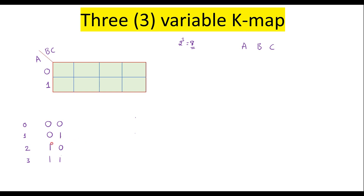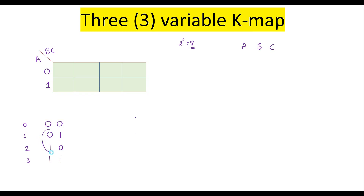Similarly, if we consider 1 0 and 1 1, there is a 1-bit difference, so grouping from cell 2 to cell 3 is possible. But we found that from cell 1 to cell 2 the grouping is not possible.